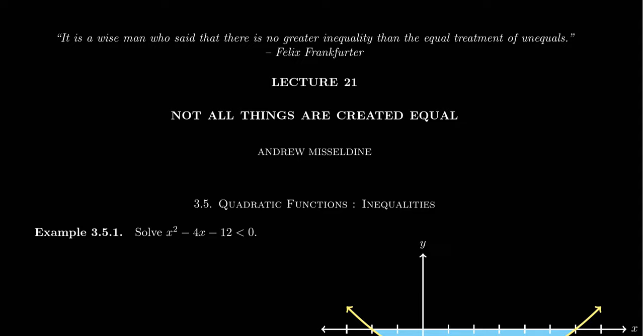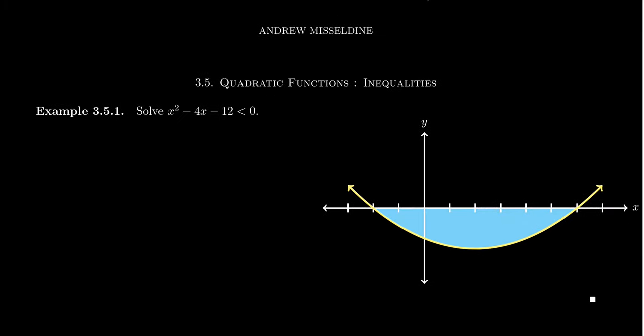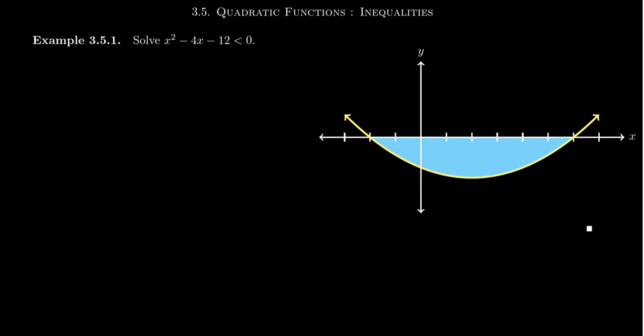Much of Chapter 3 has been involving quadratic functions and quadratic equations, but as often as necessary, we switch over to inequalities. When we're trying to solve inequalities, the technique I always suggest is that we actually begin by solving the equation. So if you want to solve a quadratic inequality, like x squared minus 4x minus 12 is less than 0, I would first begin by solving the equation x squared minus 4x minus 12 equals 0, and then we solve it like any other quadratic equation.